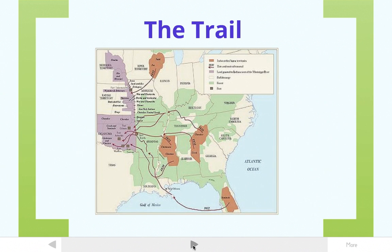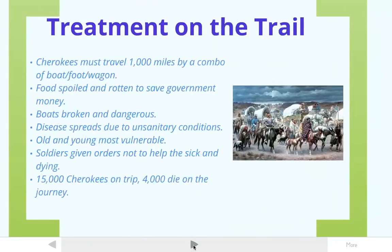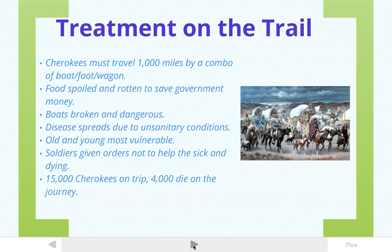Things didn't get much better along the way. Here's a map — you can see the Cherokee lands in orange, and the route they had to travel out into the purple area, which was the Indian reservations. It was a journey many thousands of miles long. The Cherokee weren't the only ones forced to make this trip, but they are the most famous because of the Trail of Tears. The Cherokees had to travel a thousand miles by boat, on foot, and by wagon.